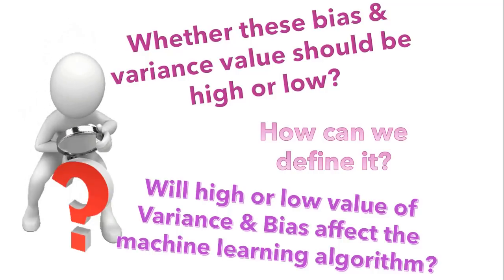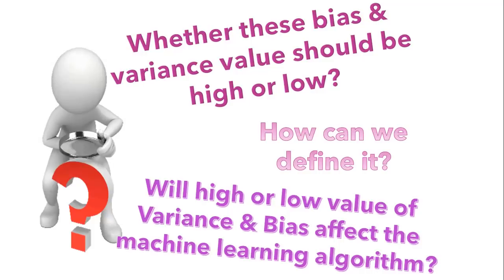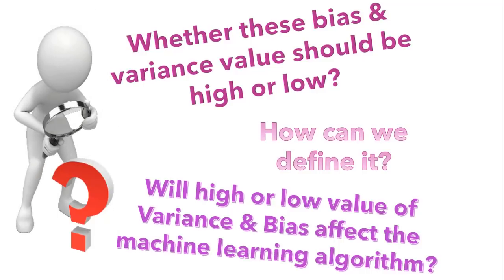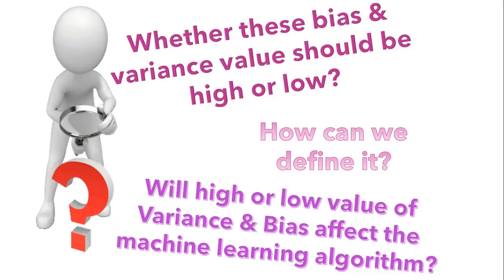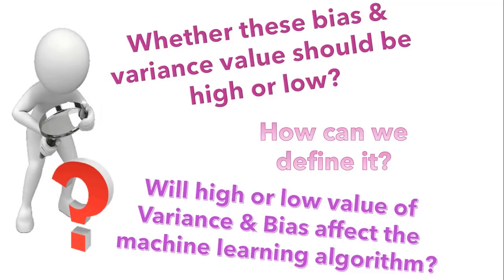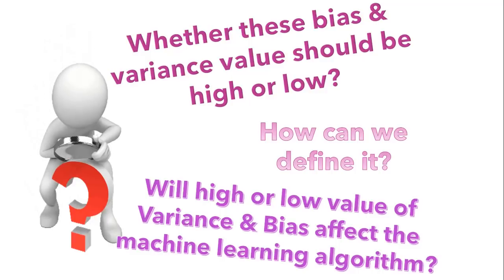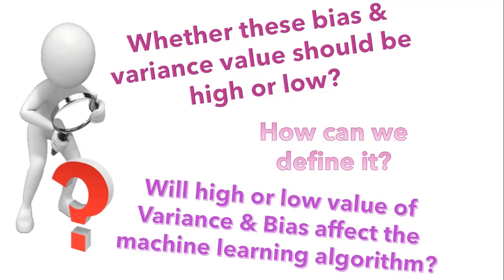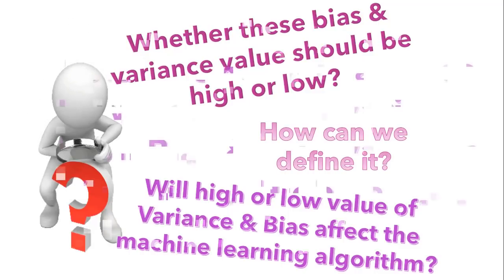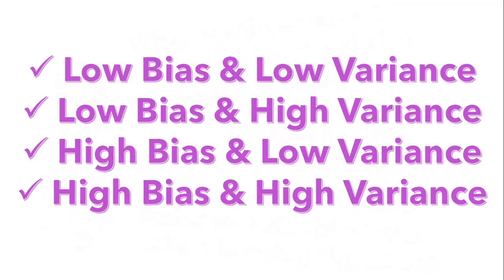How can we define it? Will high or low values affect the machine learning algorithms? We definitely have to consider these values while fitting any machine learning algorithm to our dataset, as ignoring high or low bias-variance values can highly affect the model output. Let's quickly look into four scenarios: low bias and low variance, low bias and high variance, high bias and low variance, and high bias and high variance.